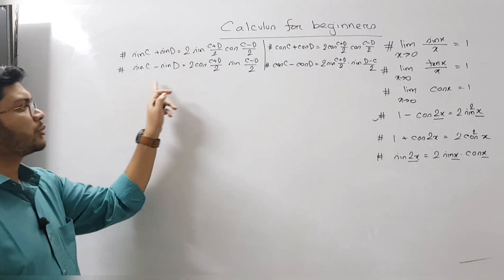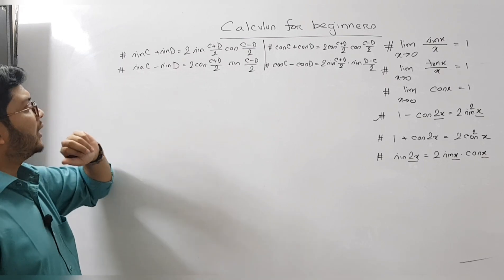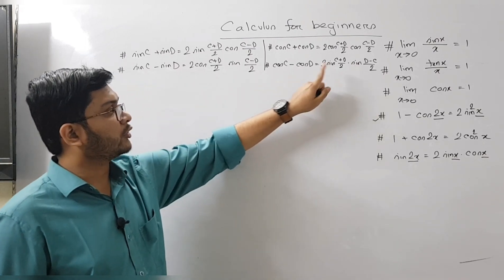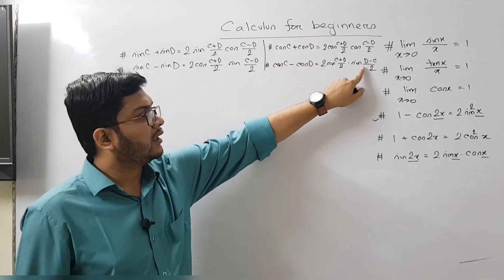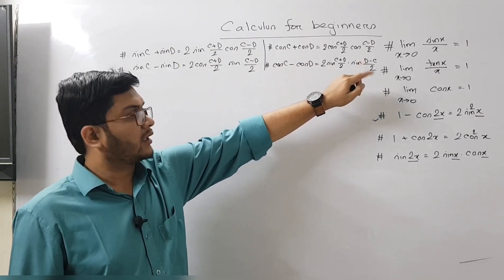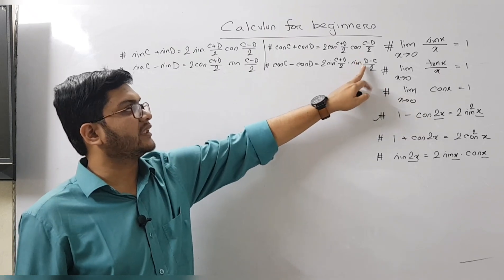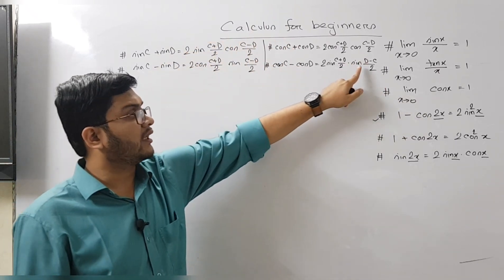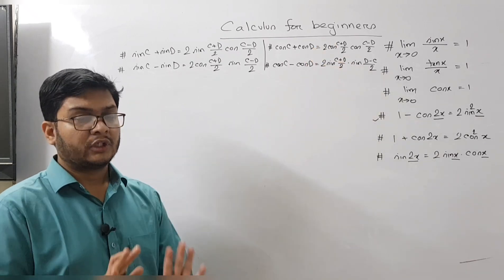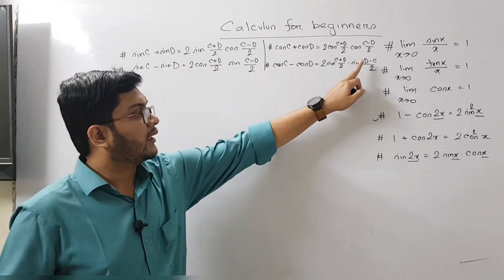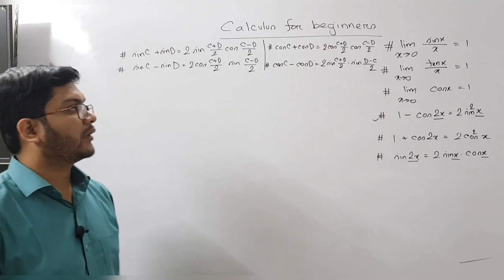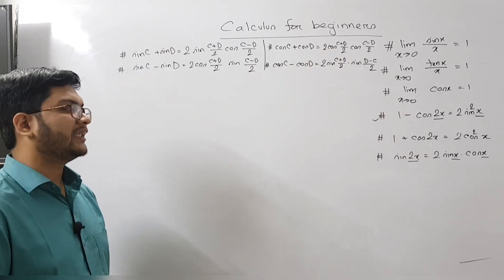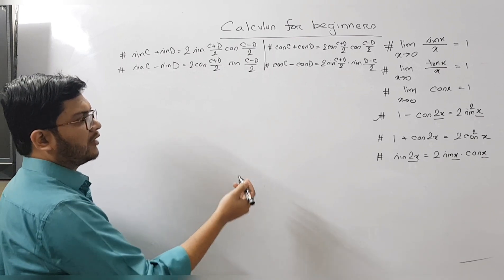Now coming to the product-to-sum formulas, there is one exception you should notice: in cos C minus cos D, the term inside is (d minus c)/2 — d comes first and then c — whereas in all other formulas it's (c minus d)/2. Keep this in mind for that particular formula.